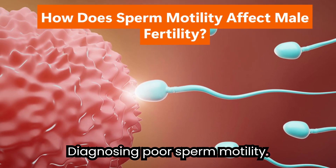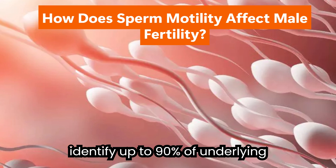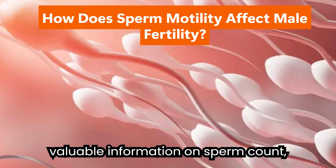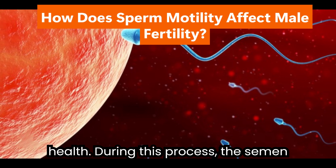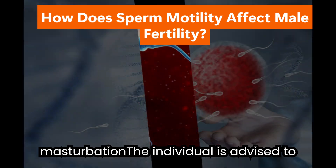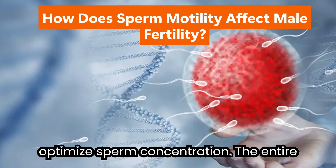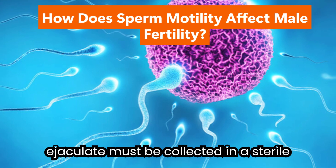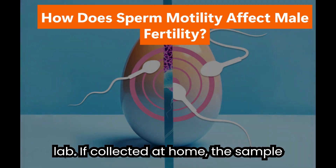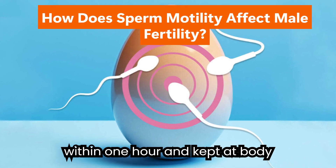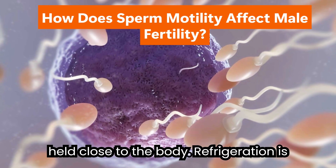Semen analysis is the gold standard for diagnosing male infertility, capable of identifying up to 90% of underlying male fertility issues. It provides valuable information on sperm count, motility, morphology, and overall semen health. During this process, the semen sample is typically collected via masturbation. The individual is advised to abstain from ejaculation for two to seven days before sample collection to optimize sperm concentration. The entire ejaculate must be collected in a sterile container to ensure accurate analysis. Samples are often obtained at a clinic or lab.